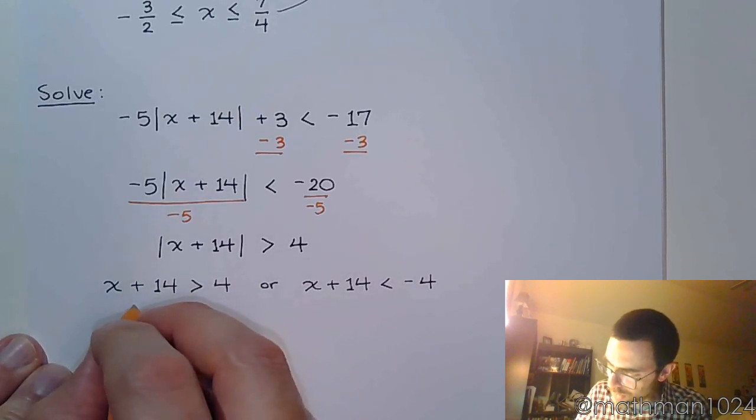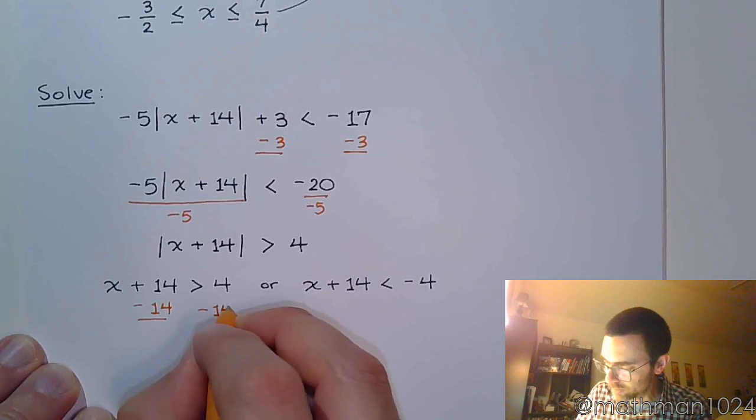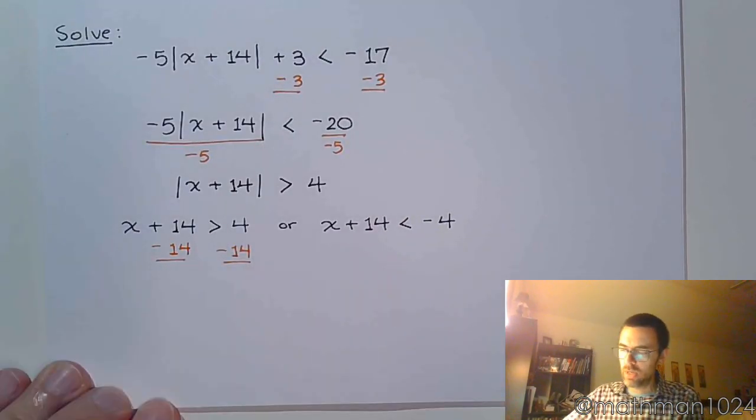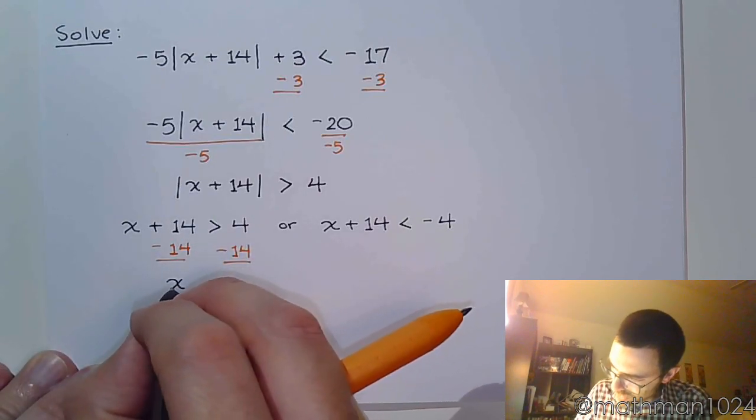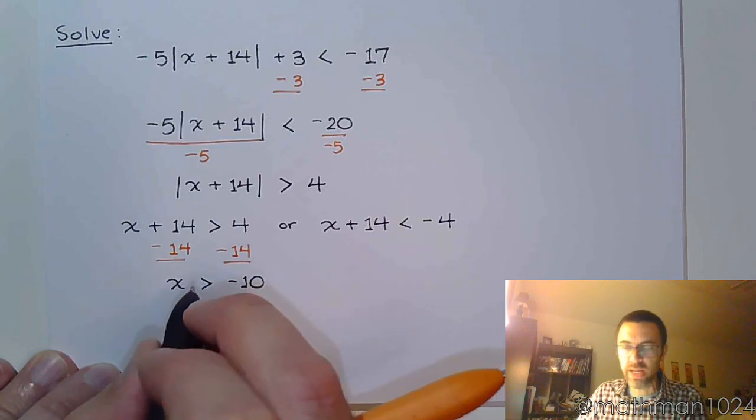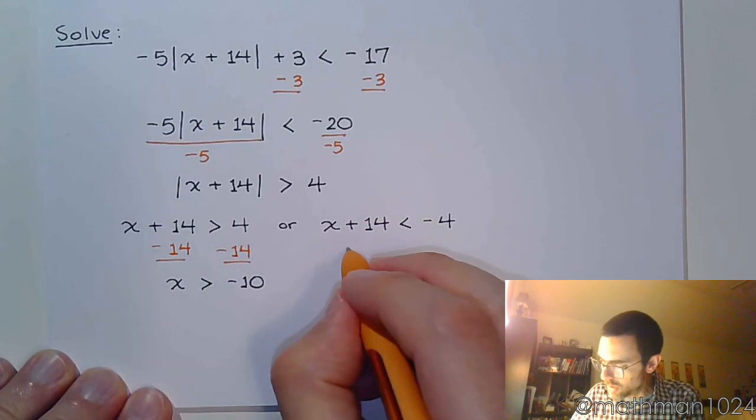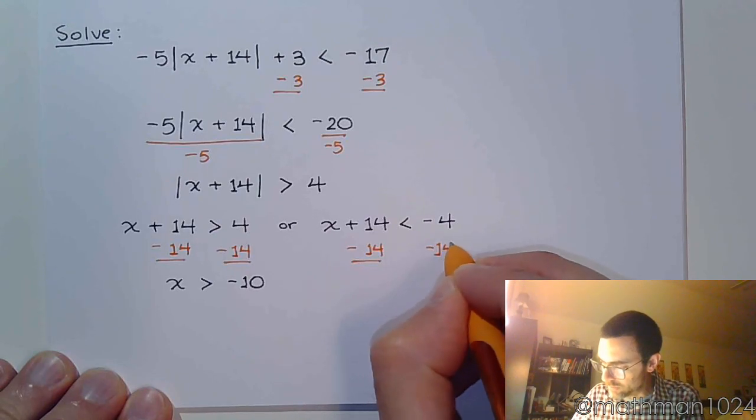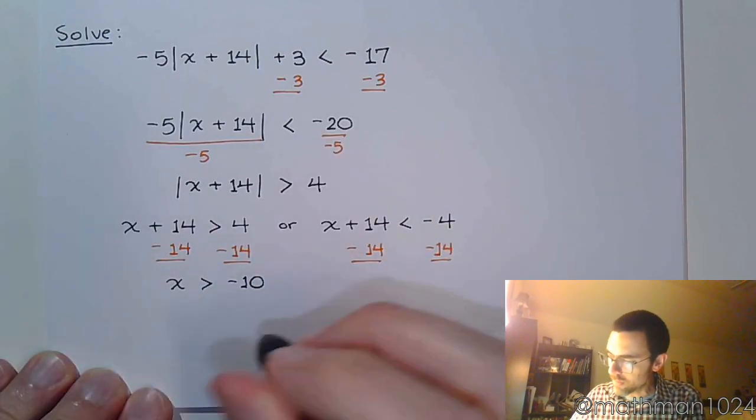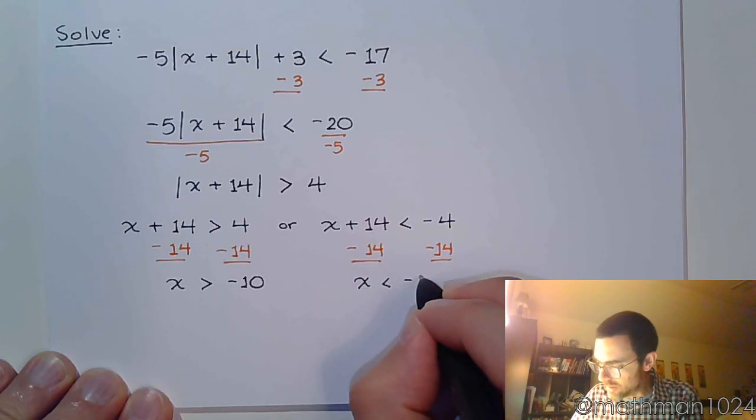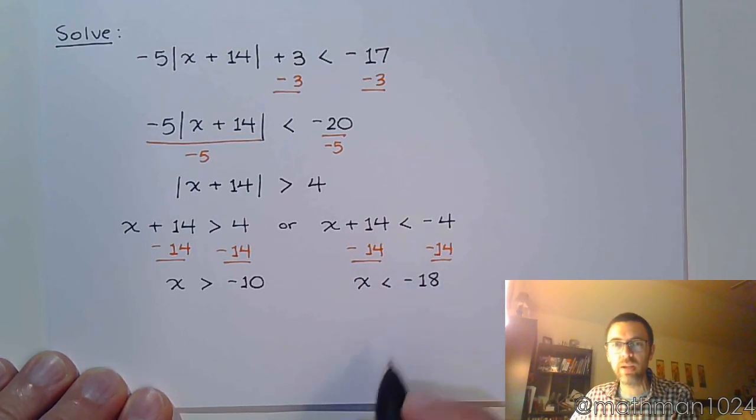And then we just go through the process of solving each of these inequalities. So this gives me x is greater than negative 10. Over here, I need to subtract 14 as well. So x is less than negative 18.